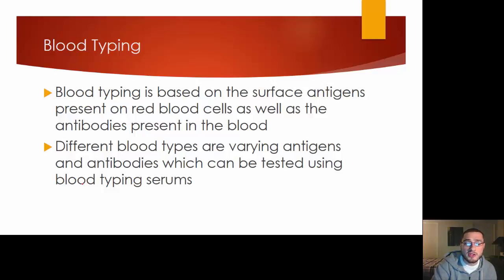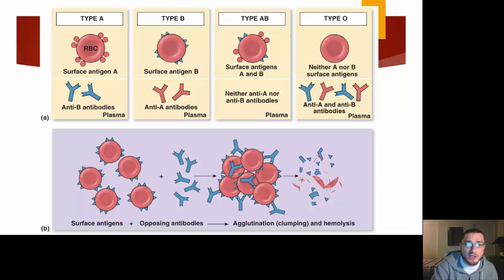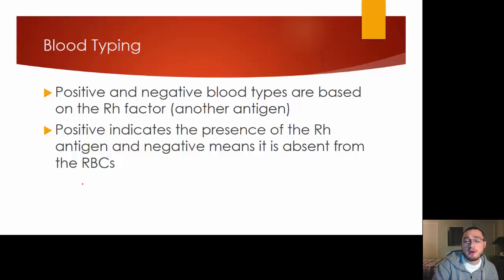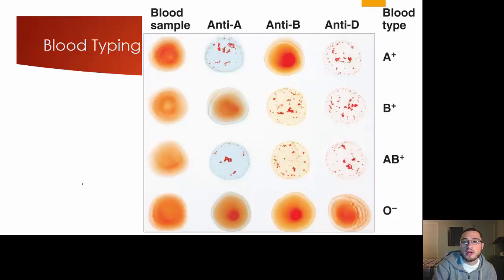Blood typing is very important because we have the statistics and probability for it, and it helps us exonerate innocent suspects. Positive and negative blood types are based on the Rh factor — another antigen — while the AB antigen is what makes you type A, B, AB, or O. If you have the A antigen, you're type A; if you also have the Rh factor, you're A positive. If you have the B antigen without the Rh factor, you'd be B negative; if you have neither, you'd be O negative. We put anti-A on and observe a reaction, then put our Rh factor solution on — if it reacts, we know it has Rh antigens. If it reacts with A and the Rh factor, we know it's A positive.